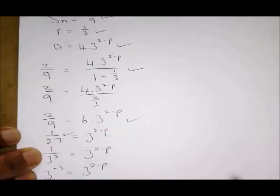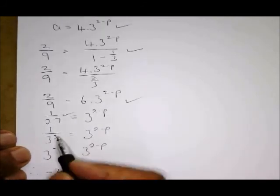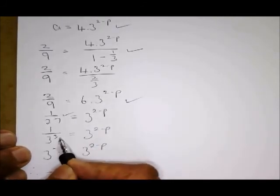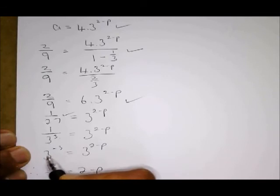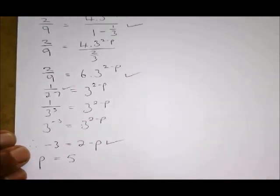This may be the quickest way to do it. Then 27 is 3 to the power 3. Take it up and becomes 3 to the power negative 3. So I have the same basis, so therefore the exponents are equal, so therefore p equals 5.